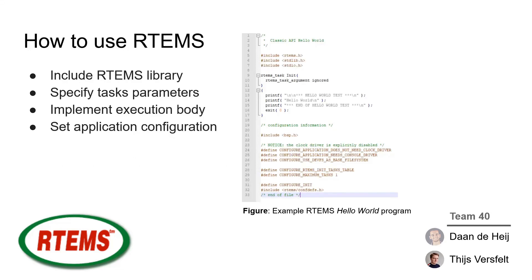So how do you actually use RTEMS? On the right we have included an example of a Hello World program. This is written in C and at the top the RTEMS library is included. Then a task is initialized with some arguments or parameters. The execution body is then implemented — in this case a Hello World string is printed and the task is exited. At the end of the file the application configuration is set.